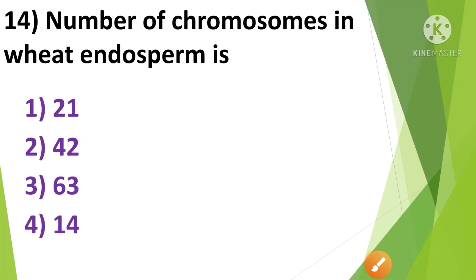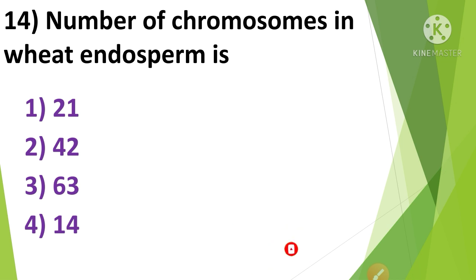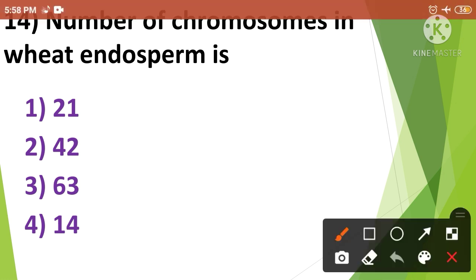Next question: Number of chromosomes in wheat endosperm is — 1st option 21, 2nd option 42, 3rd option 63, and 4th option 14. The correct answer is option 3rd, 63. The number of chromosomes in wheat endosperm is 63.